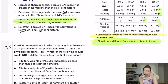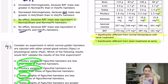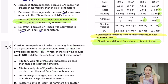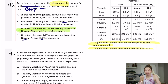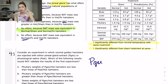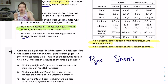Question 43 says: consider an experiment where normal golden hamsters are injected with either pineal gland extract or physiological saline — which result would NOT validate the results of the first experiment? Glancing at answer choices, we'll be measuring pituitary or testes weights. Think about how these conditions relate to the groups in the passage. If injected with pineal gland extract, that's kind of the opposite of a pinealectomy, and these are normal hamsters with the pineal gland intact. Physiological saline would be like the sham procedure.